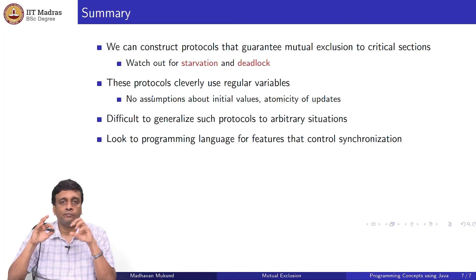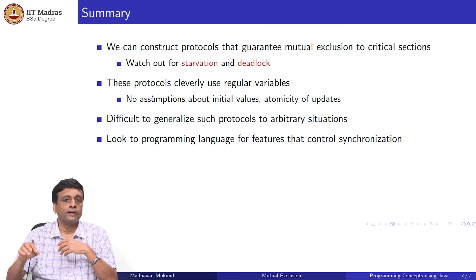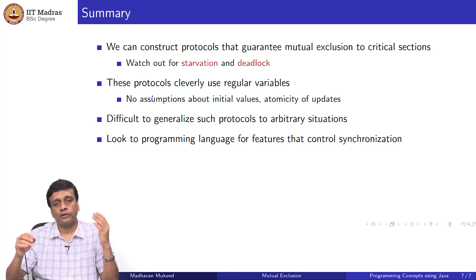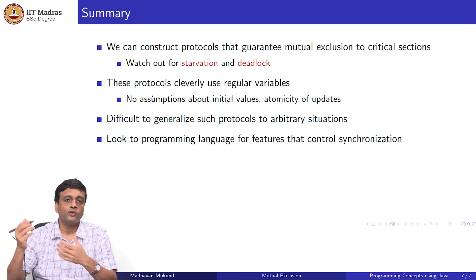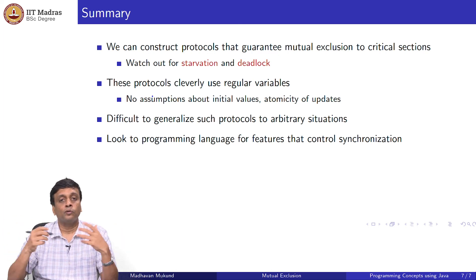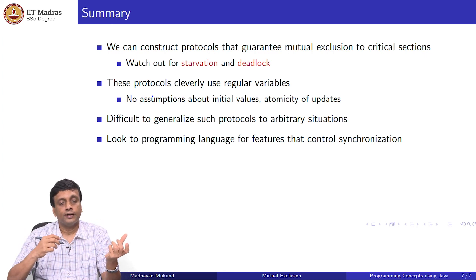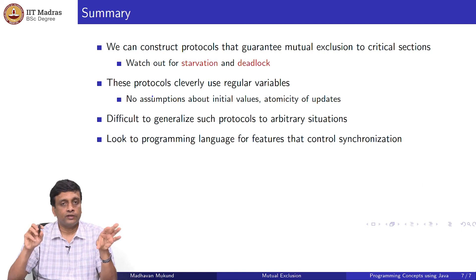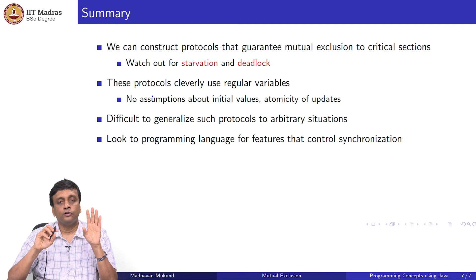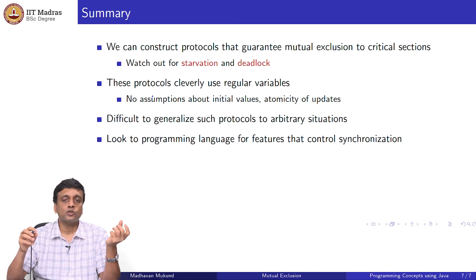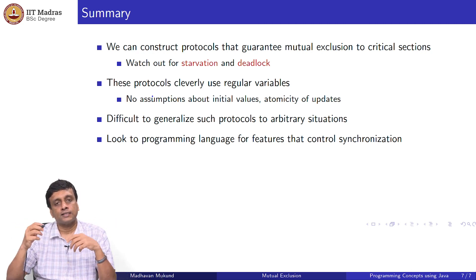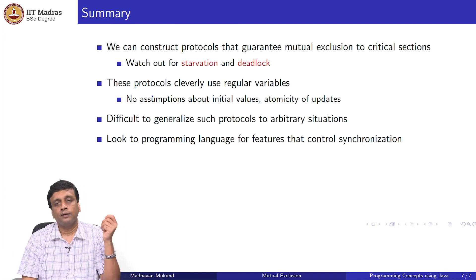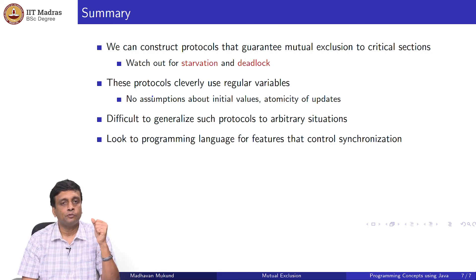To summarize: when designing protocols for mutual exclusion, we can use conventional shared variables without assumptions about atomic updates or initial values. But if we are not careful, we run into starvation — where one process is locked out due to non-cooperation — or deadlock — where two or more processes are contending with no way to decide who goes first. Peterson's algorithm solves this for two processes using regular shared variables, guaranteeing no starvation, no deadlock, and mutually exclusive access. Lamport's bakery algorithm extends this to N processes. But since these are tricky to design and use, what we really want is programming language support for synchronization.